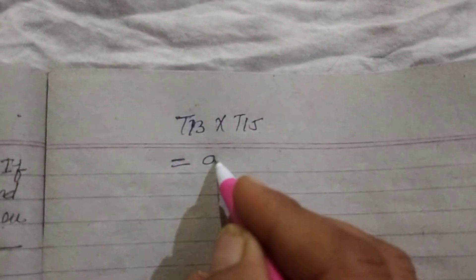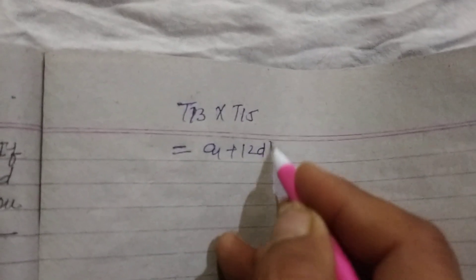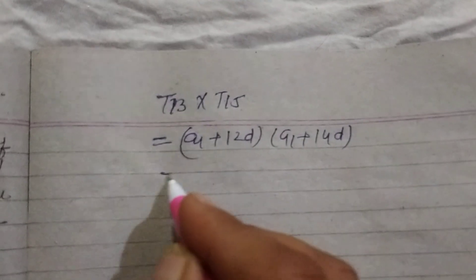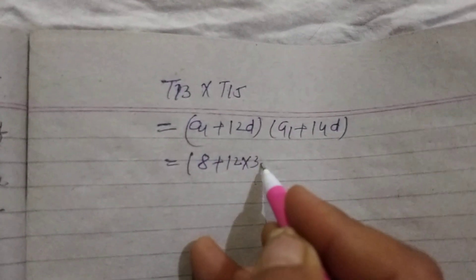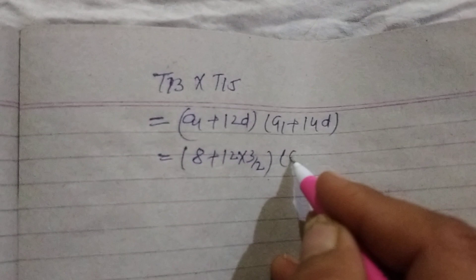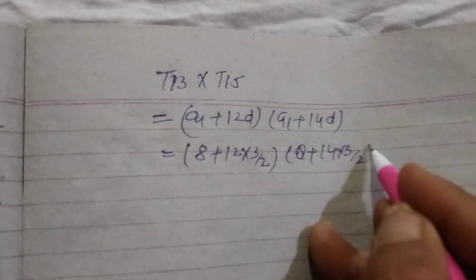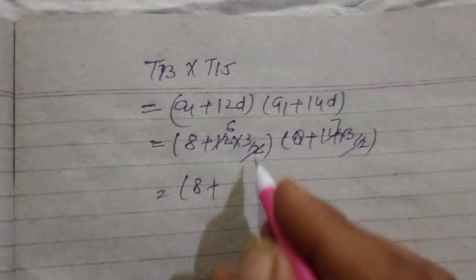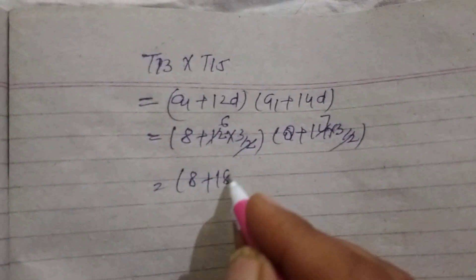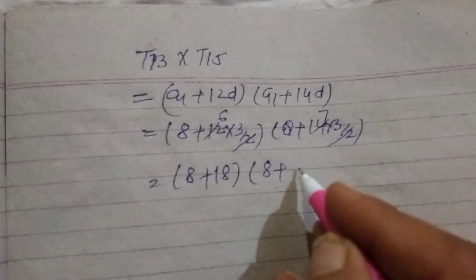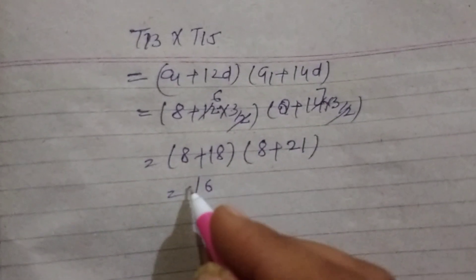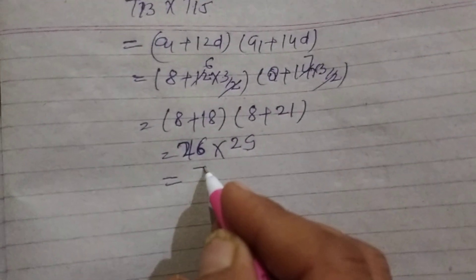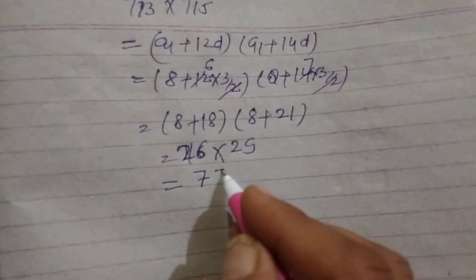Therefore T13 = A1 + 12D and T15 = A1 + 14D. With A1 = 8 and D = 3/2: T13 = 8 + 12×(3/2) = 8 + 18 = 26, and T15 = 8 + 14×(3/2) = 8 + 21 = 29. So the product is 26 × 29 = 754.